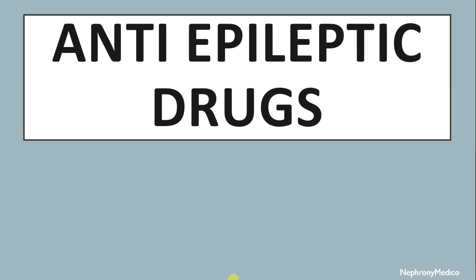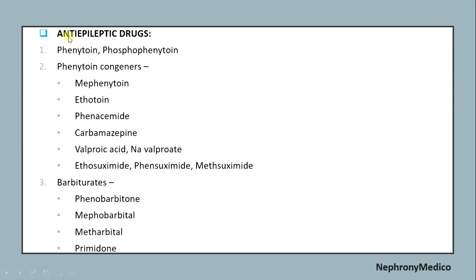Hello and welcome. Let's talk about anti-epileptic drugs. The anti-epileptic drugs include phenytoin, fosphenytoin, and phenytoin congeners like mephenytoin, ethotoin, phenacemide, carbamazepine, valproic acid, sodium valproate, ethosuximide, phensuximide and methsuximide, and barbiturates like phenobarbital, metharbital, and primidone.